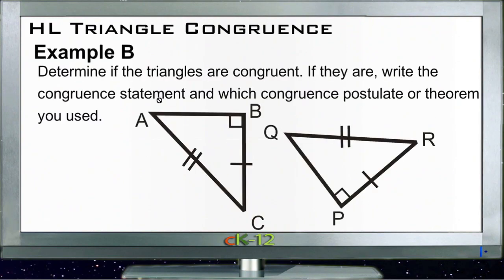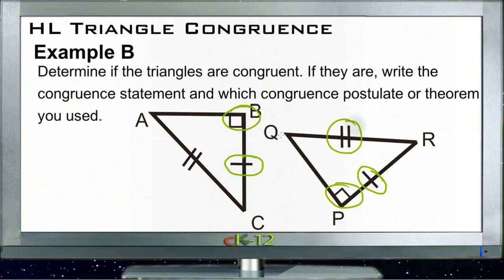Example B asks us to determine if the two triangles are congruent, and if they are, write the statement and which congruence postulate or theorem we use. Here we know that these are both right triangles, we know that one of the legs is congruent, and we know that the hypotenuse is congruent. So yes, we can use the hypotenuse leg theorem.